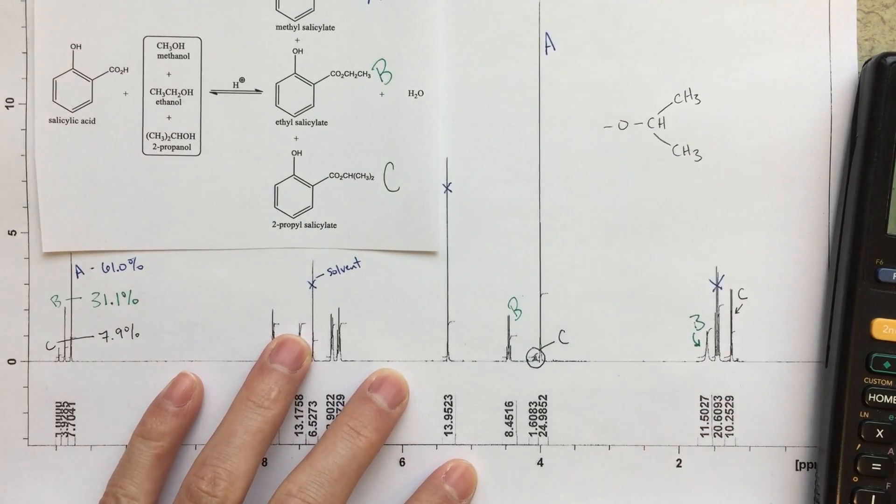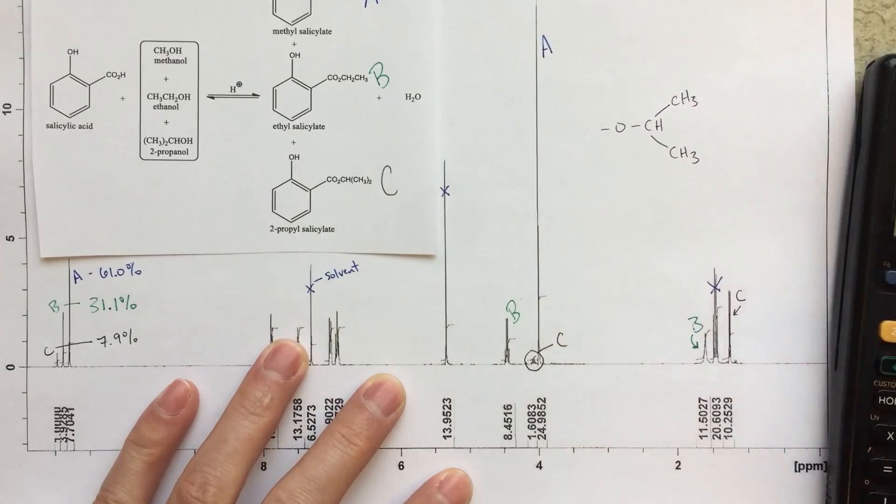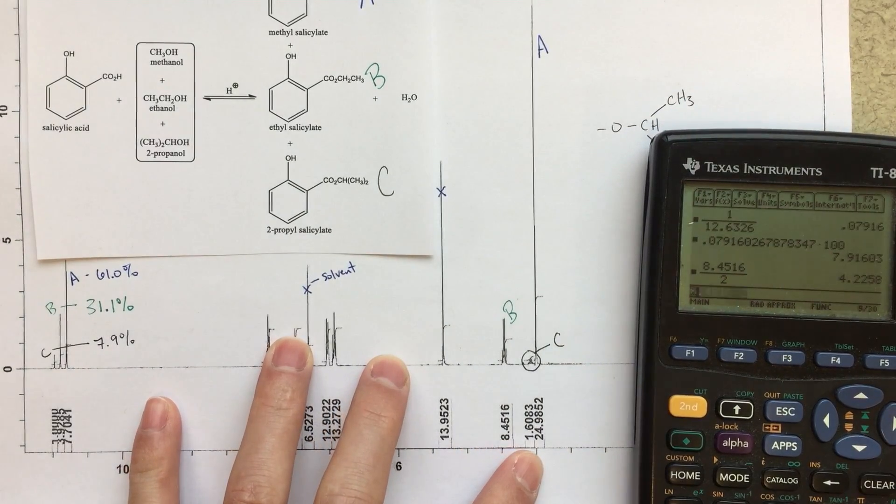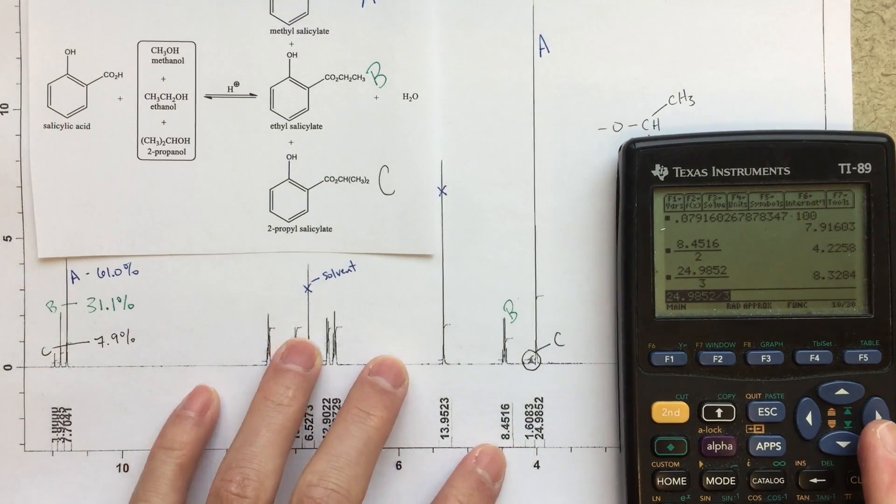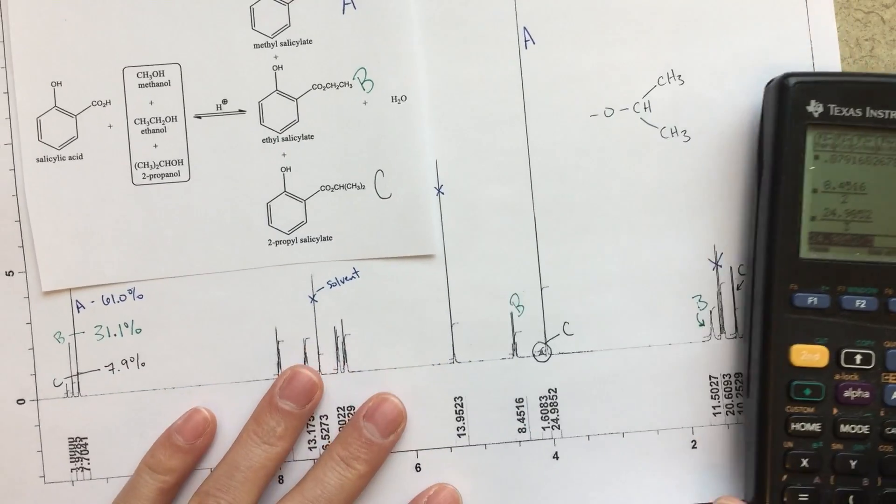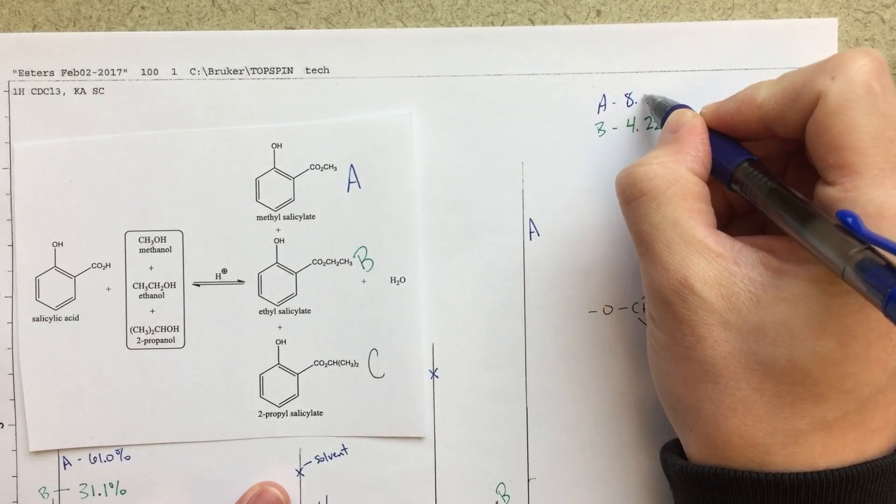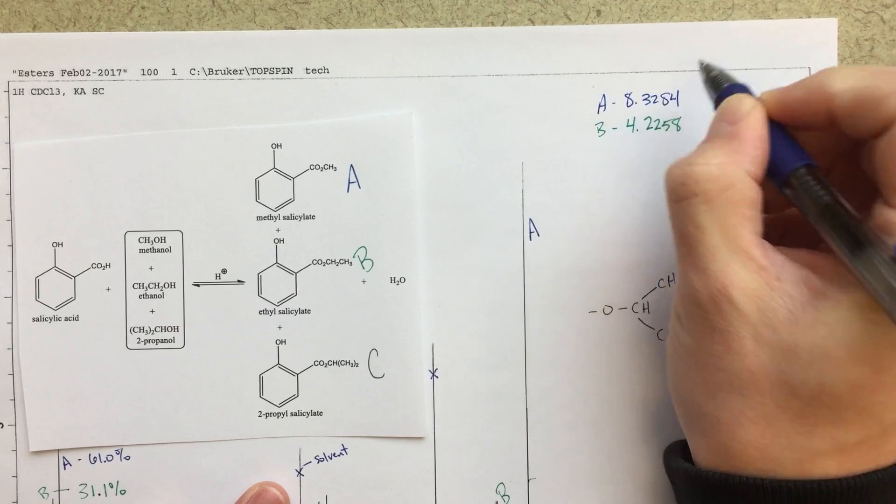For A, we'll do A on top, I guess. I'm going to take 24.9852 and divide that by 3. Dividing by 3, again, because that's 3 proton equivalents. So this becomes 8.3284.